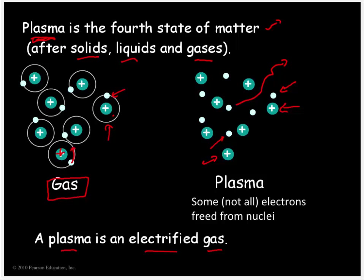Again, plasma is the most common state of matter in the solar system and the least common here on Earth. Examples of plasma include stars like the sun. Here on Earth, we see it in the form of lightning.